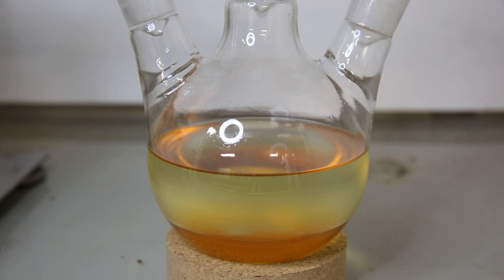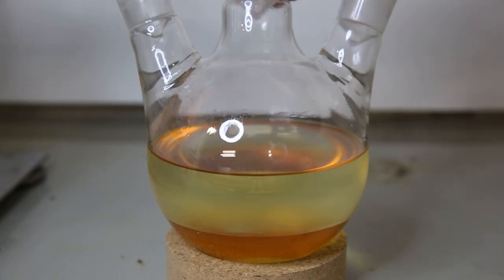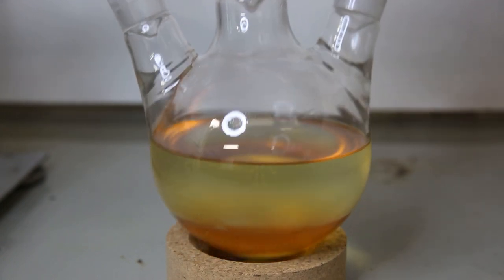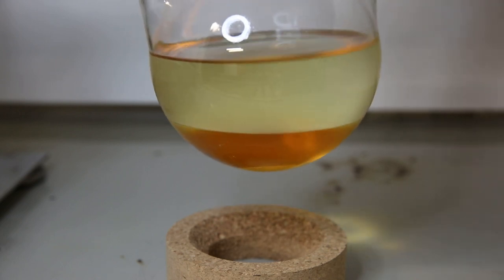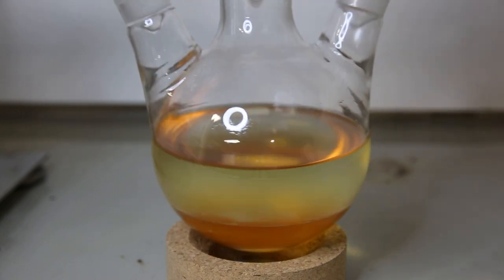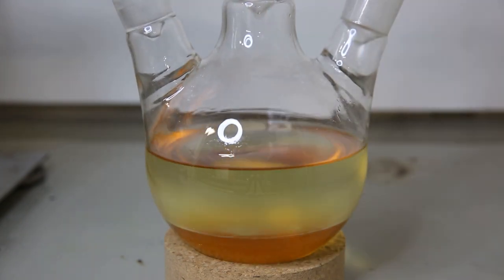After letting the flask cool down, the mixture has separated into two layers. The biodiesel layer is on top, and the glycerol layer is on the bottom. Since biodiesel is much less dense than glycerol, and it also produces around 3 times as much moles of biodiesel compared to glycerol, the biodiesel layer has a lot more volume and lays on top.